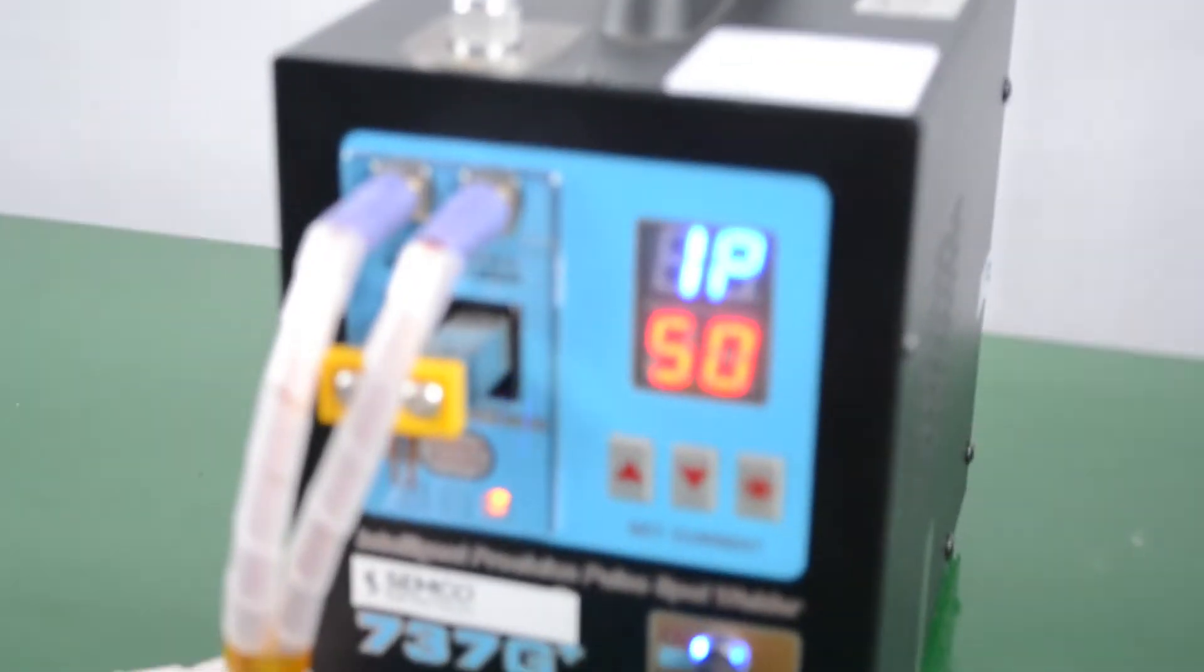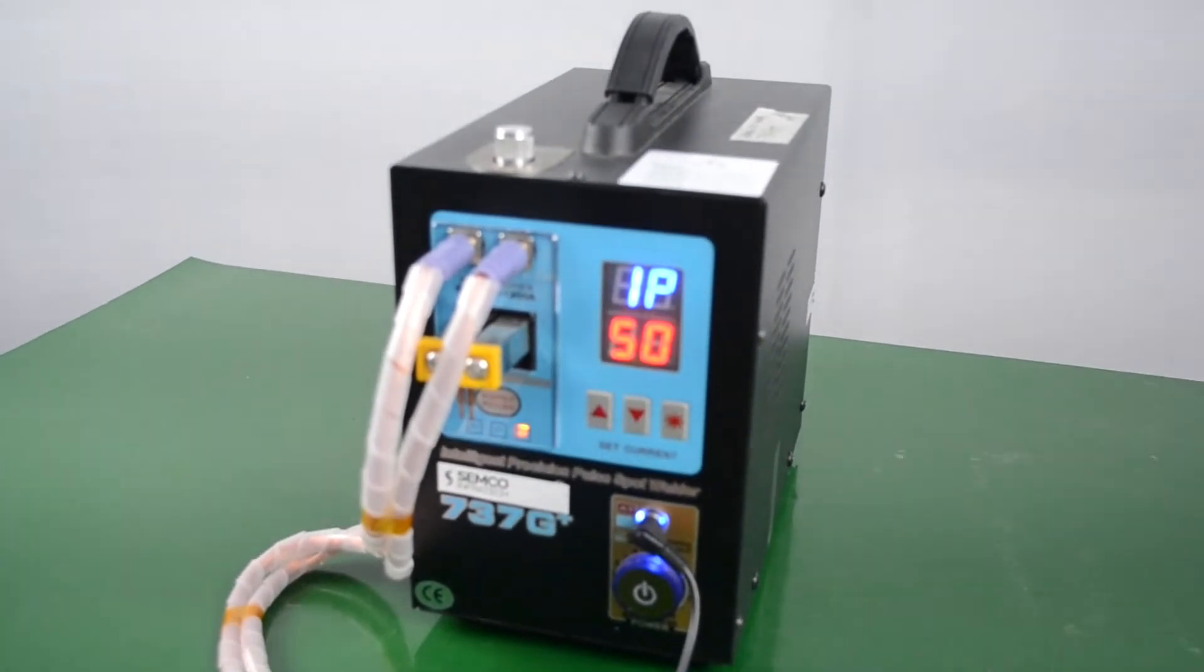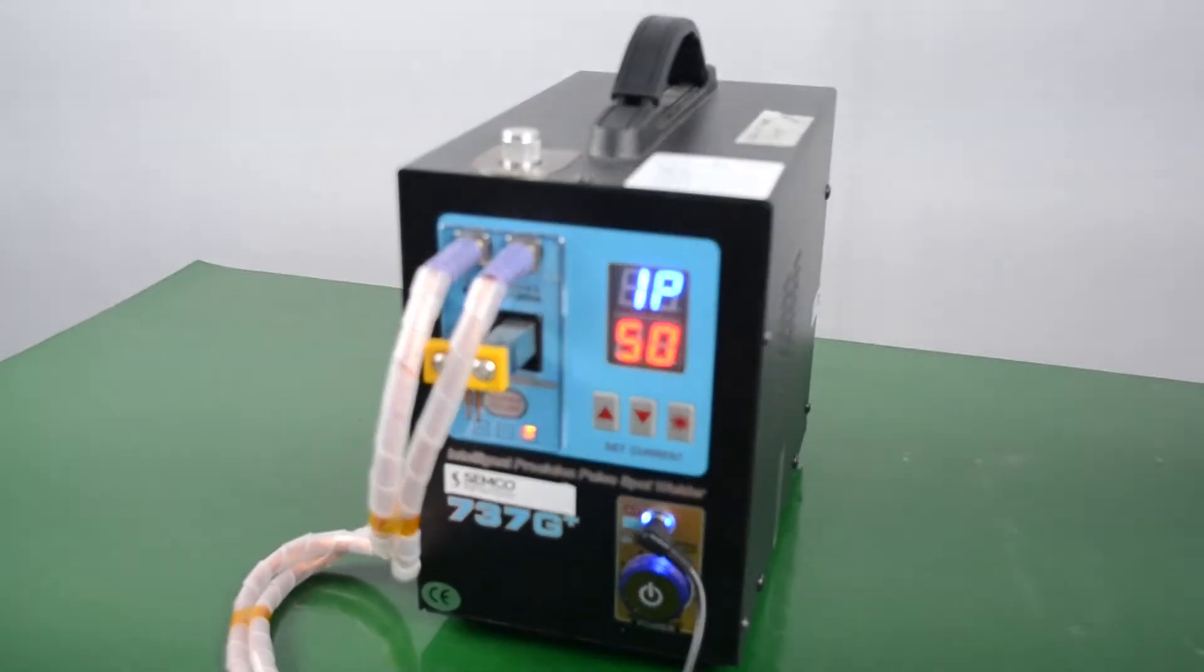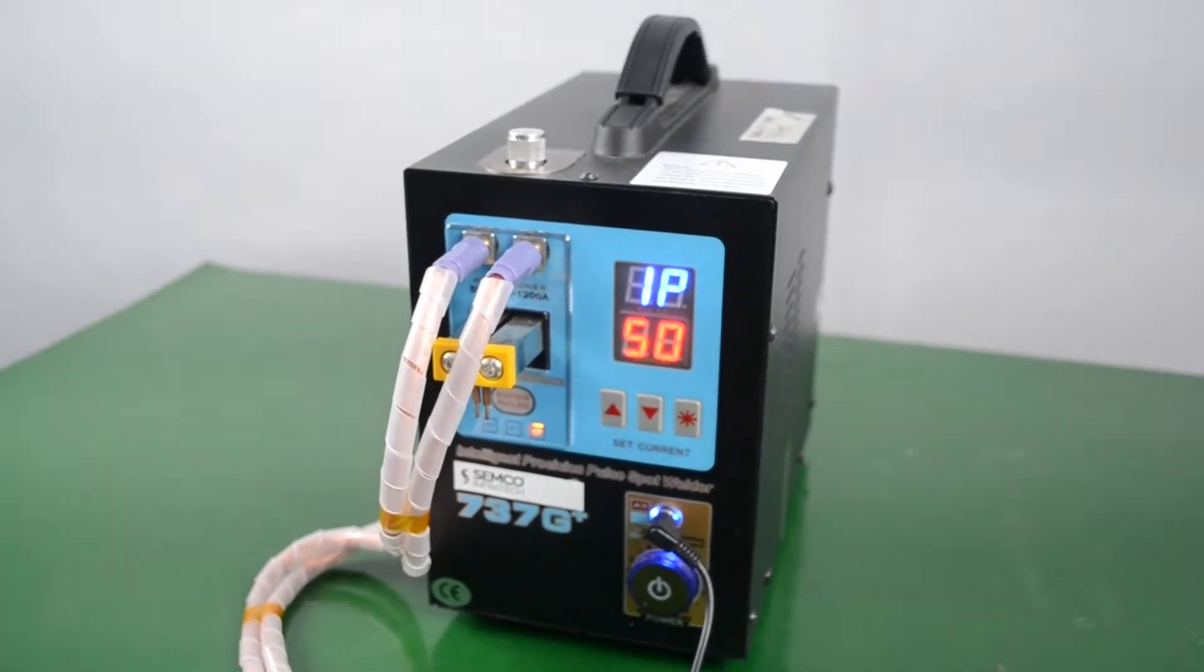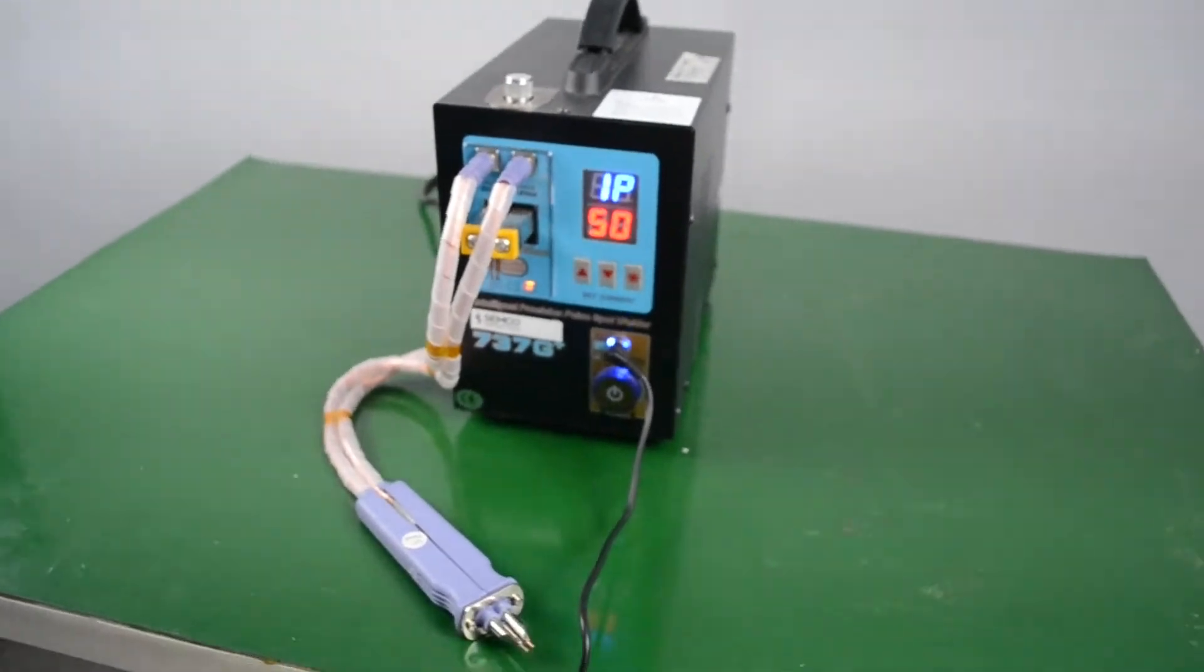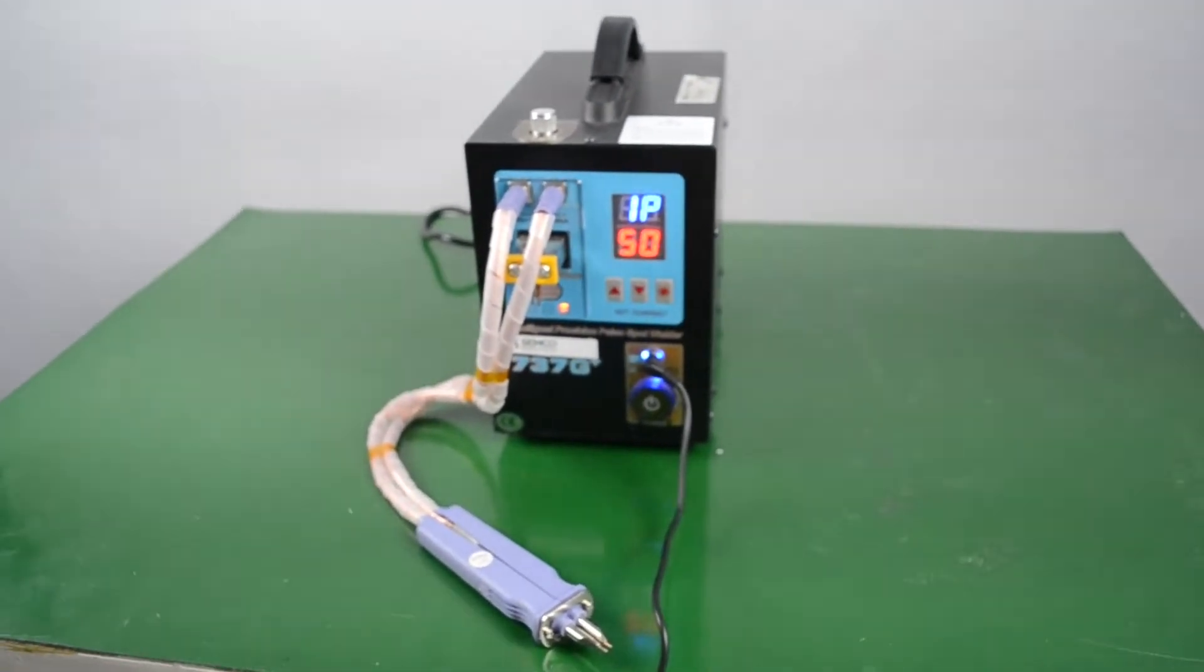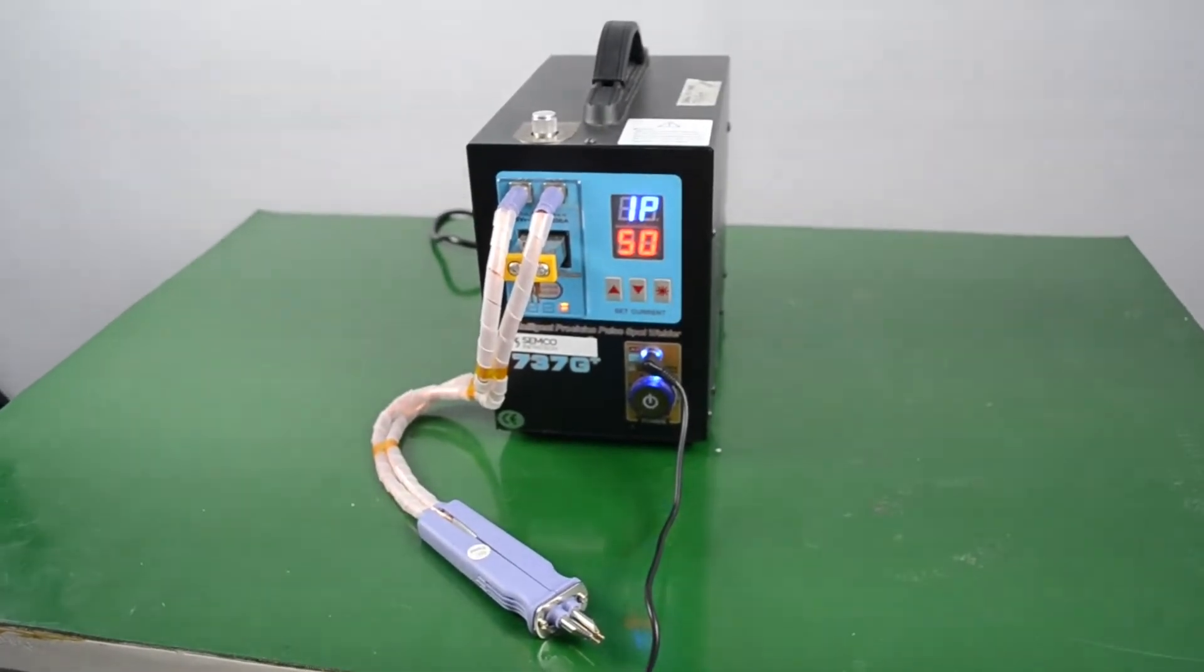The machine uses single phase 220V AC power supply with total power consumption of 4.3kW. It has a welding current range of 120-1200A. For 2 pulse setting it provides 1-10ms welding time, for 4 pulse it provides 2-20ms, and for 8 pulse it provides 8-80ms.